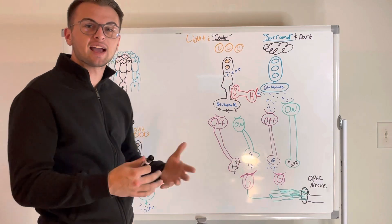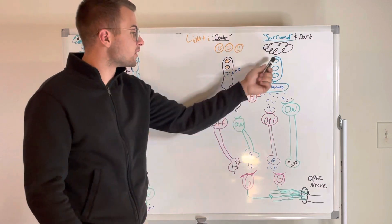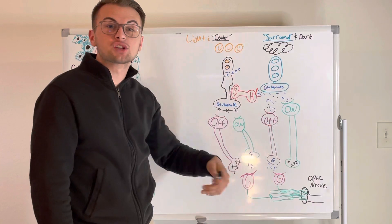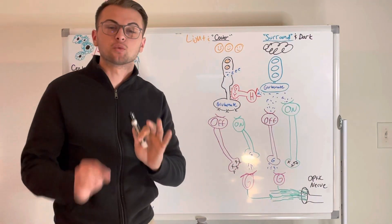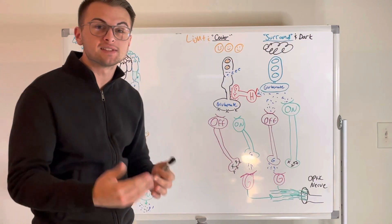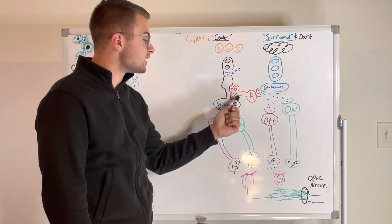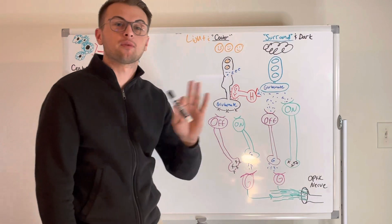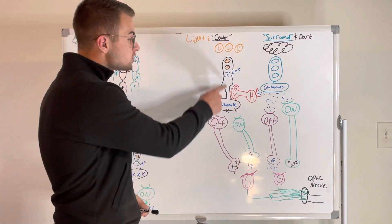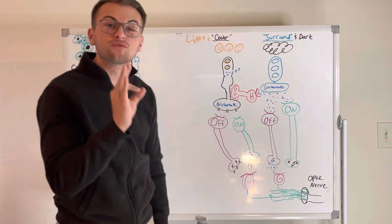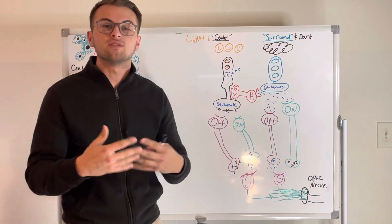This photoreceptor in the light is connected to a horizontal cell. The neighboring photoreceptor in the dark is depolarized and releases glutamate, which activates the horizontal cell. The key thing to know about horizontal cells is that they are inhibitory. So when activated by glutamate from the dark photoreceptor, the horizontal cell releases glycine — an inhibitory neurotransmitter — onto the photoreceptor in the light, causing a further restriction of glutamate release and making the signal more precise.